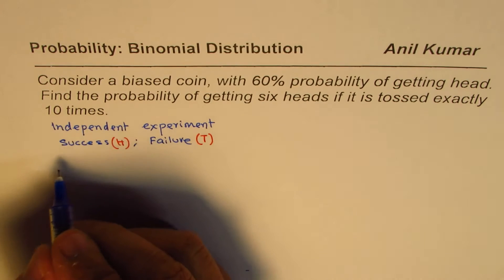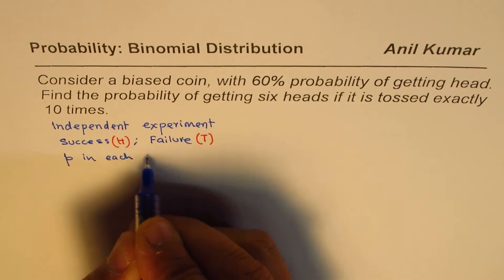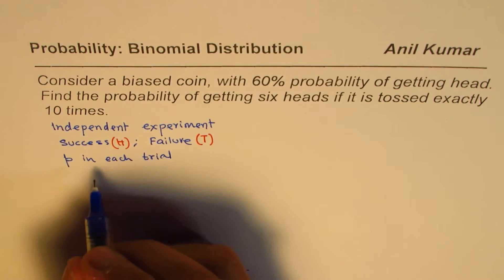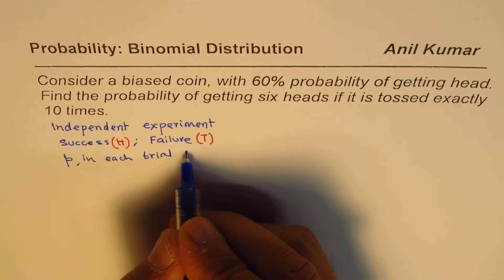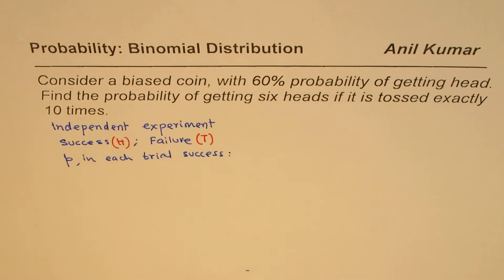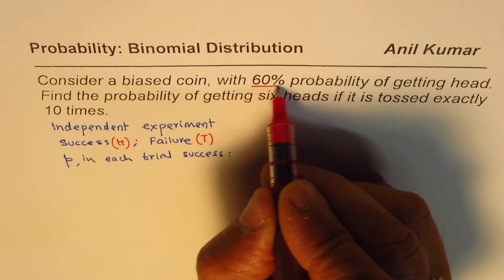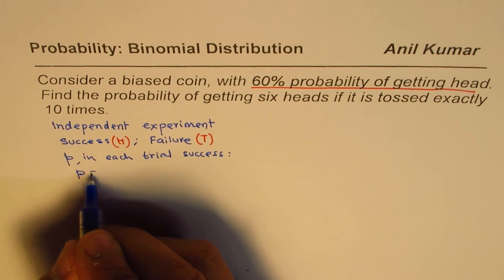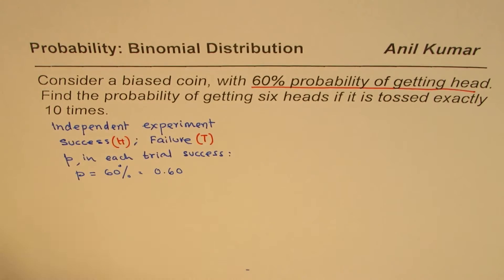And in each trial, the probability for success, when I use P for success, is: since it is a biased coin with 60% probability of getting heads, this value of P equals 60% or 0.60. So that is the probability of success.